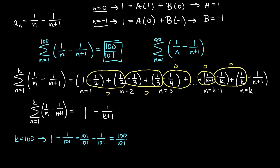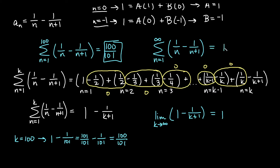If we have the sum of an infinite number of terms, infinity is not a number I can plug in, but I can look at the limit. So this one I look at what is the limit as k approaches infinity of 1 minus 1 over k plus 1. This fraction is definitely getting smaller and smaller as k gets bigger, so the limit for this term is 0, and we're getting closer and closer to 1. If I sum up an infinite number of terms, I am approaching the value of 1.